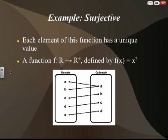An example of a surjective function is this function defined by real numbers to positive real numbers, f(x) equals x squared. A function cannot have an input that has more than one output, but in this case, we can have two inputs that have the same output. Every value in the codomain has a domain value. For example, f(-1) equals f(1) equals 1, which shows two domain inputs having the same codomain output.